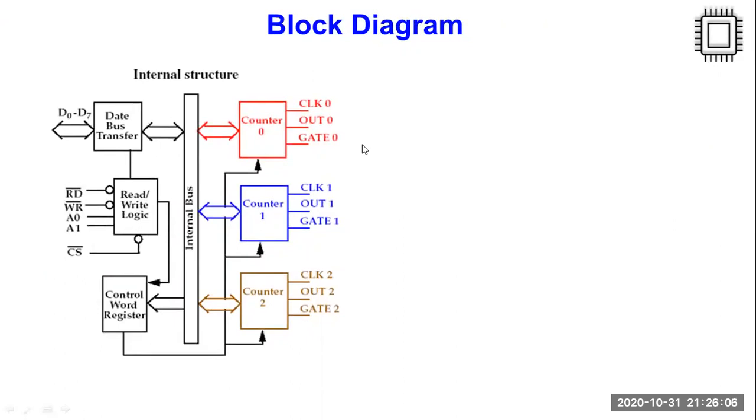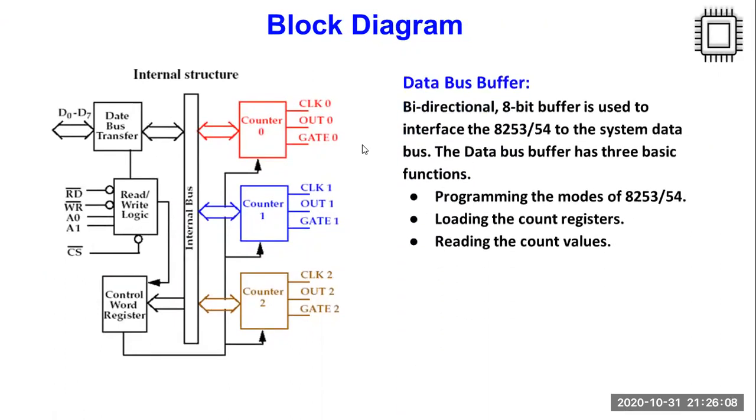The first important block is the data bus buffer. This data bus buffer helps in interfacing to your 8086 processor through the system data bus. This data bus buffer or this data bus transfer helps in three major functions. First one, it helps you to program the IC. It loads the count register and it also helps to read the count registers for the count values for specific counter.